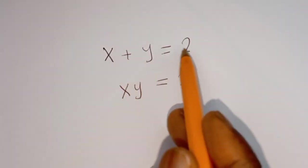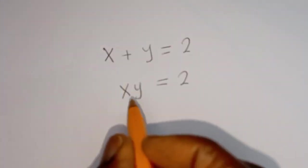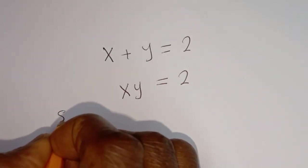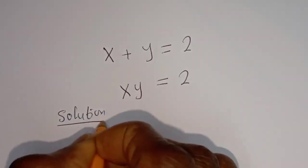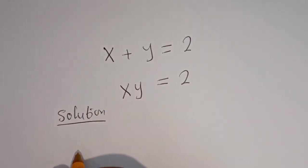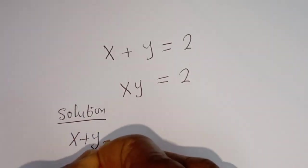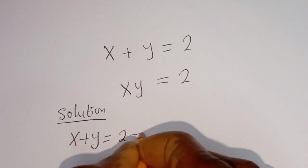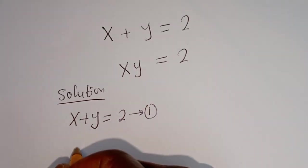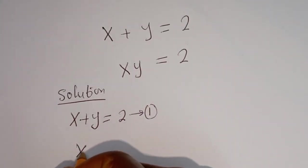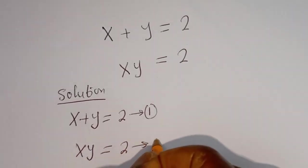Hello. How to solve for x and y in this equation: s plus y is equal to 2, and s times y is equal to 2. Solution. s plus y is equal to 2, let's call this equation 1. Then s times y is equal to 2, let's call this equation 2.